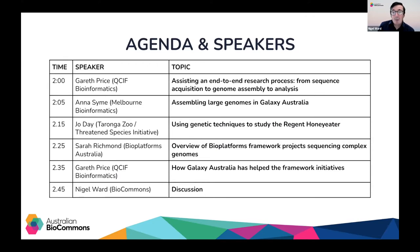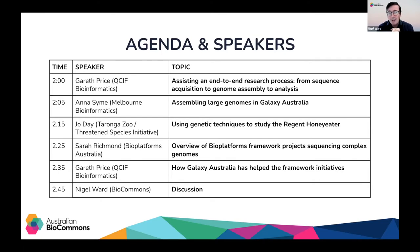You'll be hearing from a bunch of people today. Gareth Price, based at QCIF Bioinformatics and service manager for Galaxy Australia, will talk about the end-to-end process from data acquisition through genome assembly to subsequent analysis. Anna Sine, a bioinformatician at Melbourne Bioinformatics, will discuss why scientists want to assemble large genomes and the challenges they present. Jo Day, a scientist at Taronga Zoo, will cover genetic techniques for the endangered Regent Honeyeater. Sarah Richmond from BioPlatforms Australia will discuss sequencing of complex genomes and what's coming down the pipeline. Finally, Gareth will explain how Galaxy Australia has been responding to all those needs.